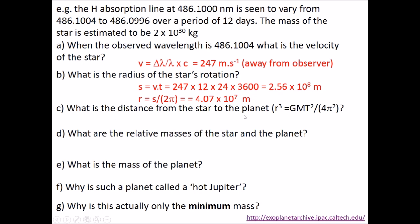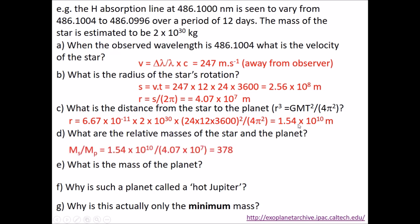The distance from the star to the planet, we can do this with Kepler's law. According to Kepler, the cube of the radius is proportional to the square of the period, with our constants that he didn't know but we worked out later. If we plug all the numbers into that, that gives us the radius of the orbit as 1.54×10^10 meters. That's about a tenth of the radius of the Earth's orbit.